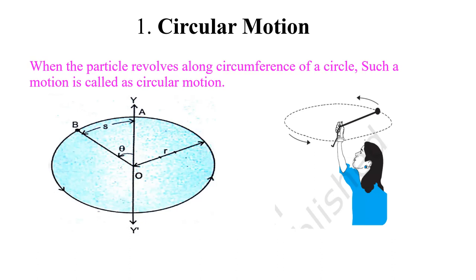So such types of examples are circular motion. Now we will discuss some other points about circular motion.